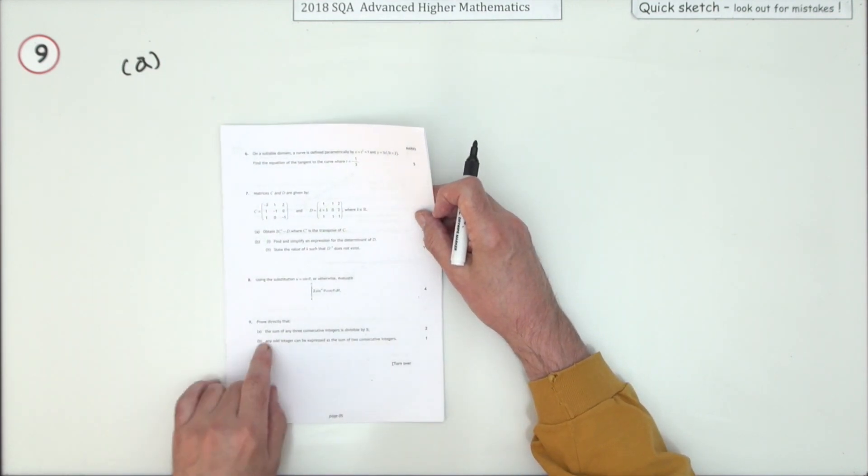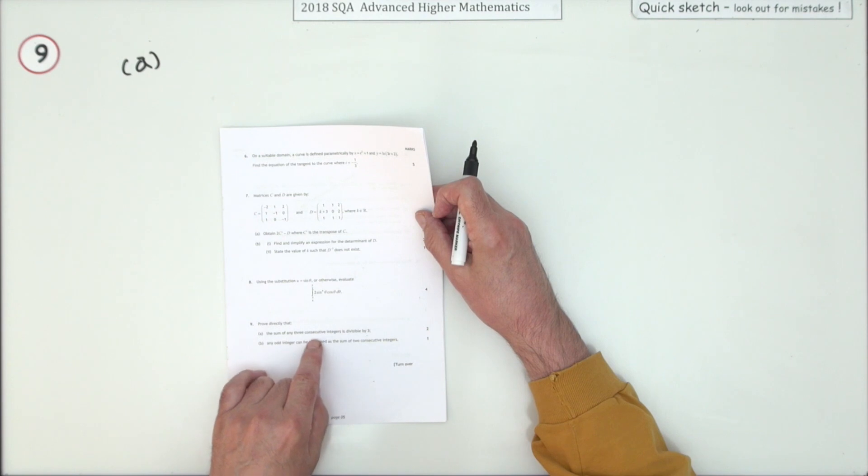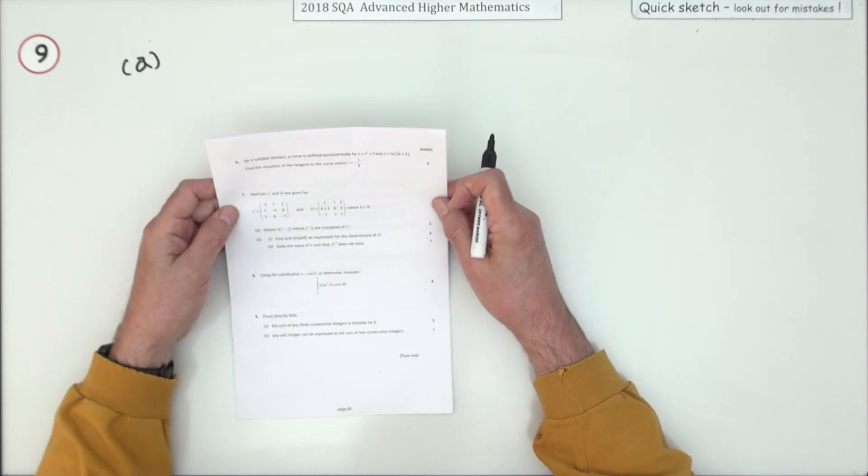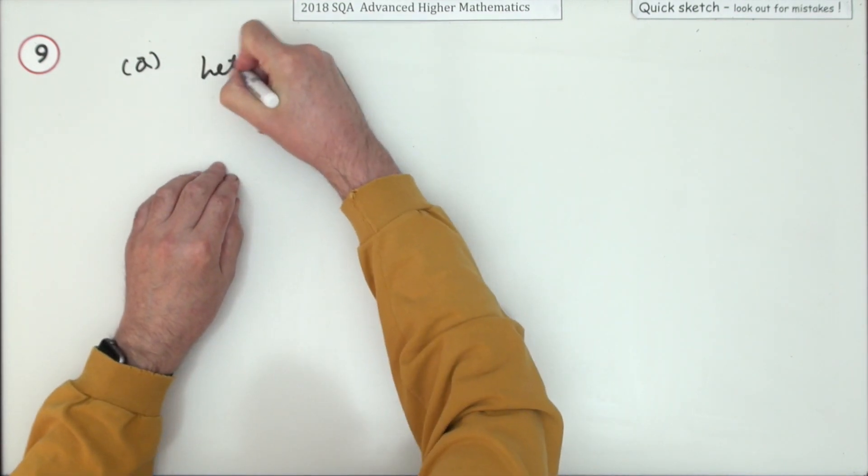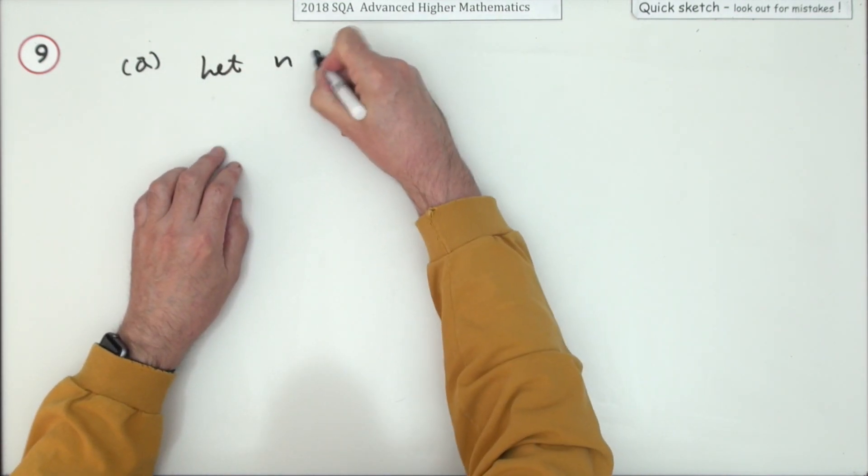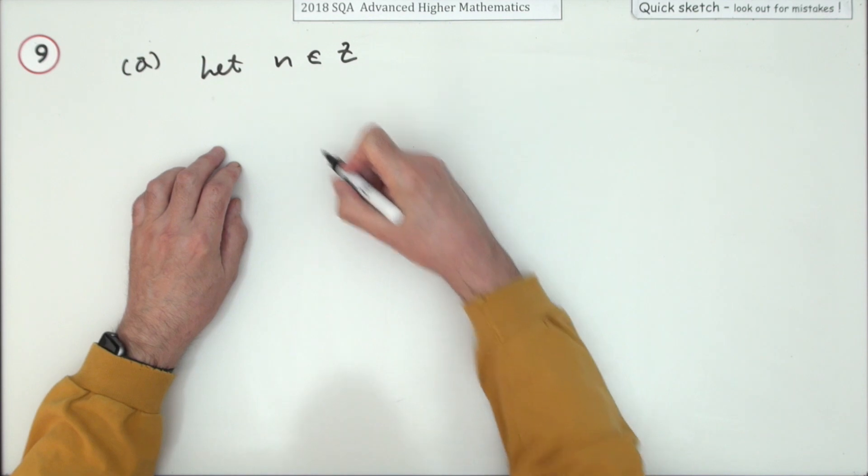Prove that the sum of any three consecutive integers is divisible by three. Well, you have to start off by introducing a variable. Let's use n. Let n be an integer.